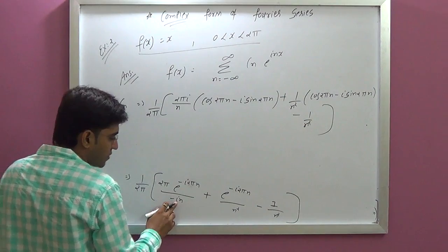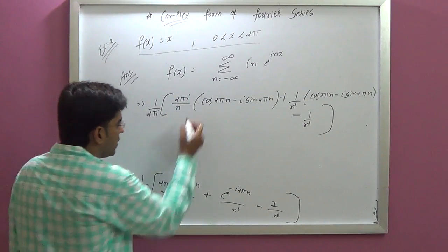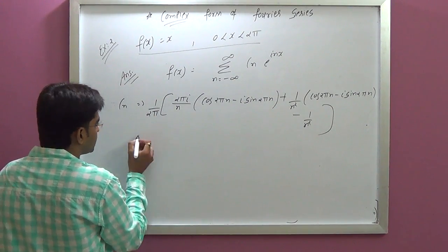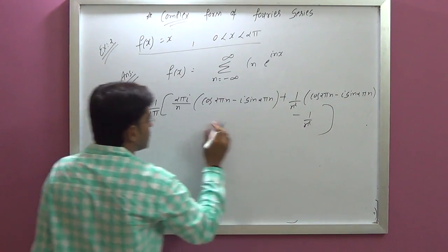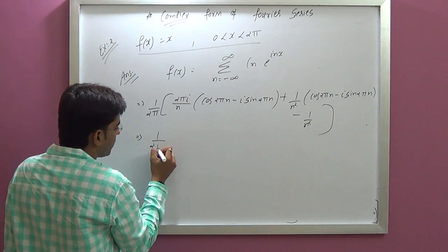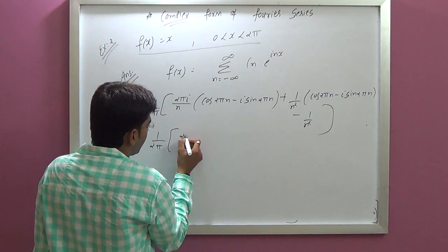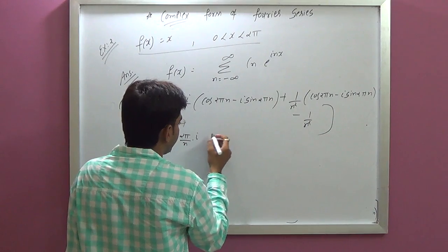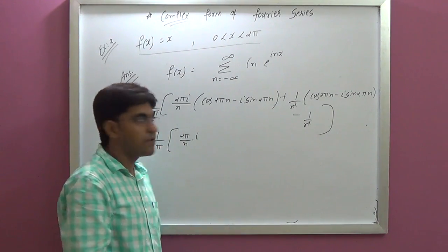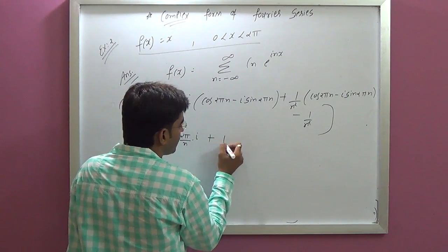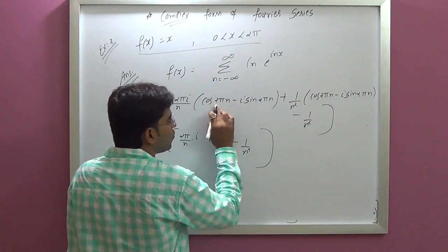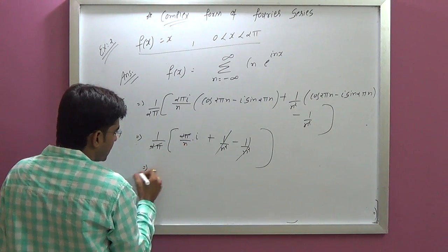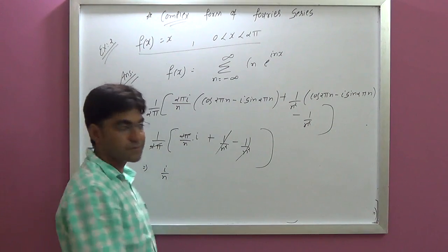Now, more simplification. Since sin(2πn) equals 0, those terms vanish. And cos(2πn) equals 1. So 1 upon n squared minus 1 upon n squared cancels, and 2π and 2π also cancel. So our answer is Cₙ equals i by n.